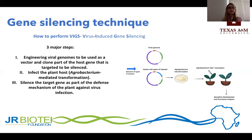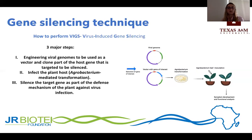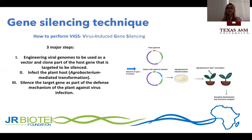Here are the three major steps for performing VIGS. First, you select the most suitable virus vector and engineer it with the region of your gene targeted for silencing. Then you proceed with agrobacteria transformation and plant inoculation. In about two weeks, you can assess symptom development and perform your functional analysis of the gene.